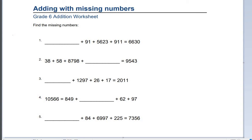Question 1. Blank plus 91 plus 5,623 plus 911 equals 6,630. You need to work out what blank is. Well, what we can do first is 5,623 plus 911 plus 91, which gives us a total of 6,625. And then you minus it from our total 6,630, giving us the missing number 5. Perfect.